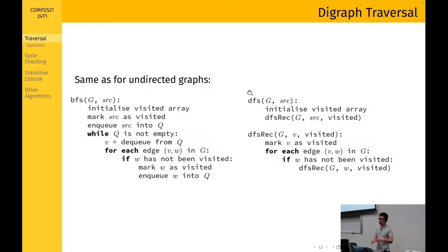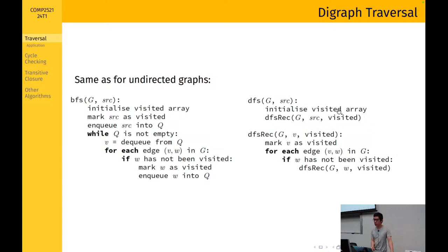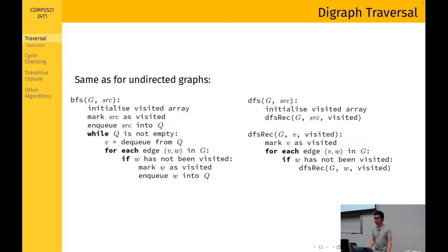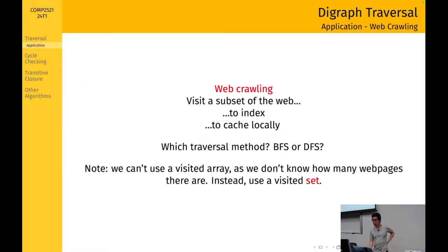With DFS, here is the recursive version. We have a recursive helper function — before calling it we set up our visited array and then call our recursive function, passing down the visited array and the starting vertex. You could also implement this using a stack, but this is just the recursive version. It's the same as for an undirected graph.